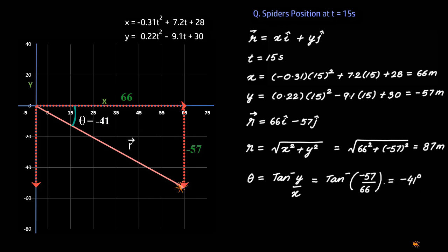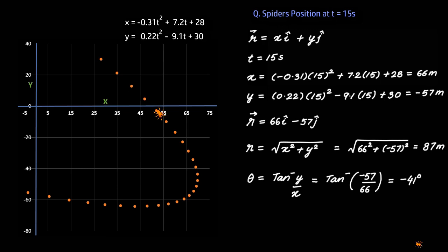We can also plot the spider's position at various other times as well, and this is how it looks. We can learn a lot of things from this graph. For example, we can say that its position vector at t = 0 seconds is this, or at t = 5 seconds is this, or at t = 10 seconds is this, and so on.